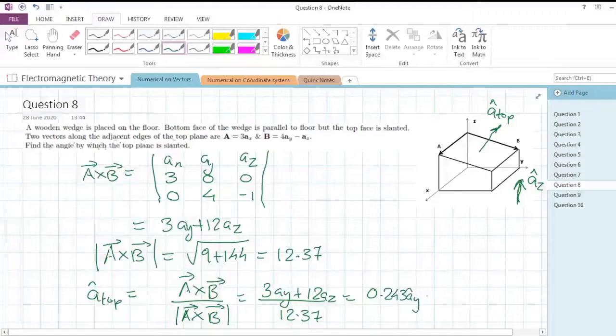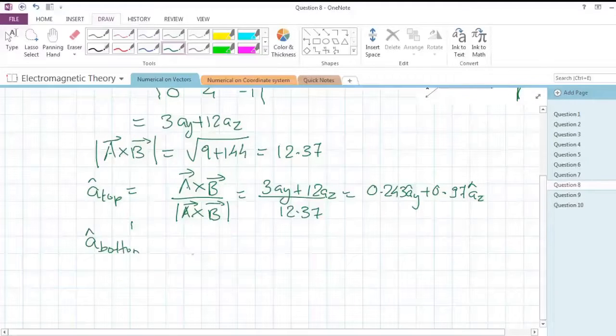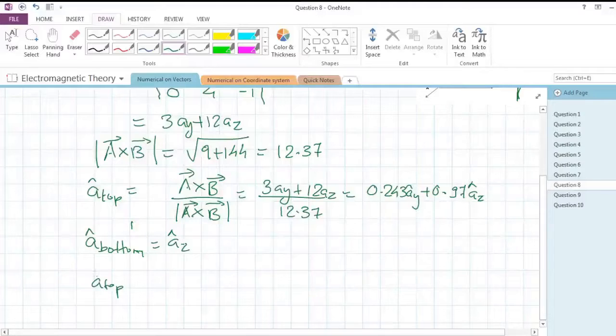We have the top unit vector, we have the bottom unit vector, and the bottom unit vector we have seen is nothing but az, perpendicular to the xy plane. So let's dot multiply this top vector and this bottom vector.